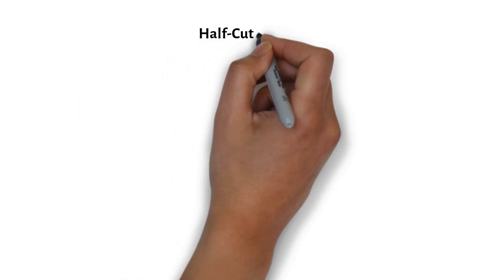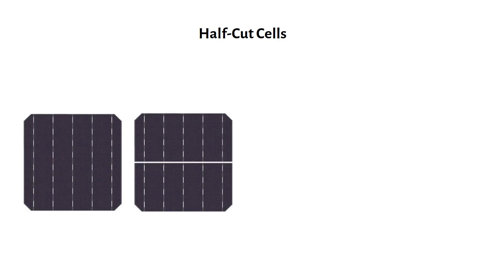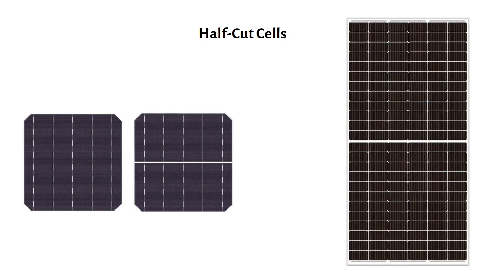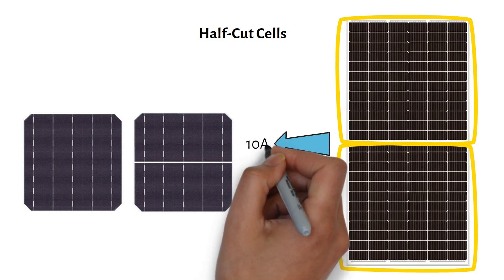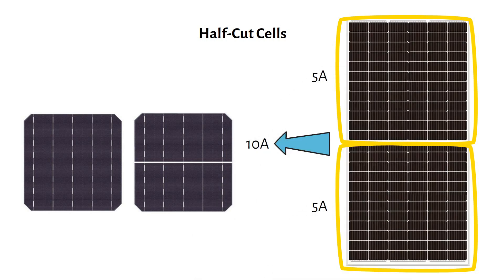Then we have half cut cells. These are literally cut in half. The reason, lower current through each half, which reduces resistive losses. If you look at the half cut solar panel, you will see the panel is basically two panels in one. It's like having two smaller panels wired in parallel, inside one panel. If the total output of the solar panel is 10A, then there are two 5A solar panels in parallel. Lower current also means that thinner busbars can be used, which allows more sunlight to hit the cells. Again, higher efficiency.